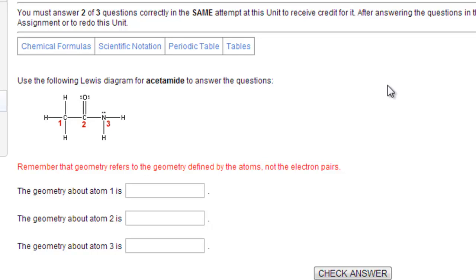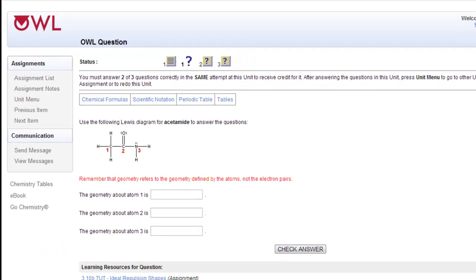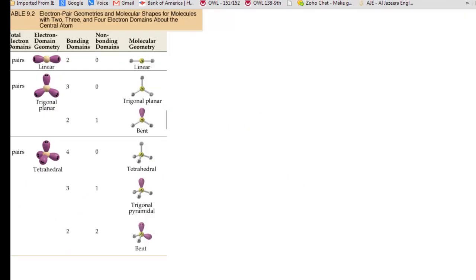So that first carbon has four single bonds connected to it, and if we use the sheet on my website or the reference in OWL, there are no lone pairs around the carbon, so the molecular geometry is tetrahedral.